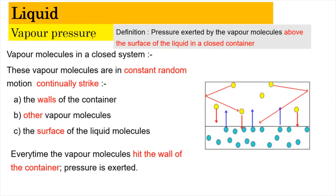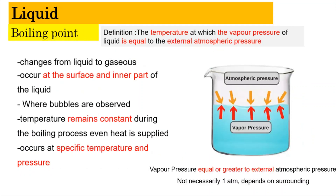Now we look at vapor pressure, which is basically the pressure exerted by the vapor molecules above the surface of the liquid in a closed container. Inside a closed container, liquid molecules can vaporize into vapor molecules (shown in yellow). These yellow particles move in constant random motion, continually striking the wall of the container and hitting other vapor molecules, as well as the surface of the liquid. Every time a vapor molecule strikes the wall of the container, a pressure is exerted. By understanding vapor pressure, we can relate it to the boiling point, which refers to the temperature at which the vapor pressure equals or exceeds the external atmospheric pressure.